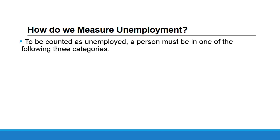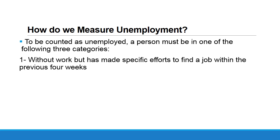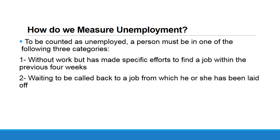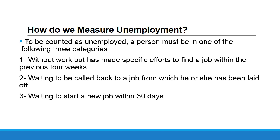For a person to be included in the unemployment rate, they must be in one of three categories: (1) without work but has made specific efforts to find a job within the previous four weeks; (2) waiting to be called back to a job from which he or she has been laid off; or (3) waiting to start a new job within 30 days.